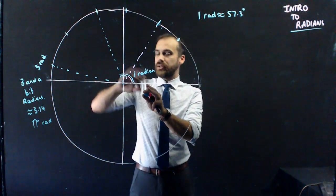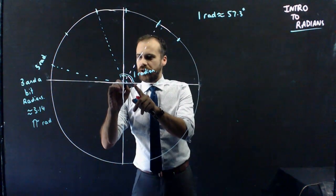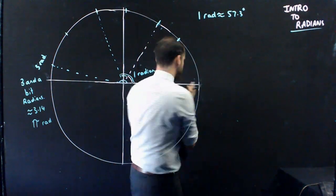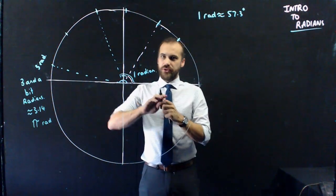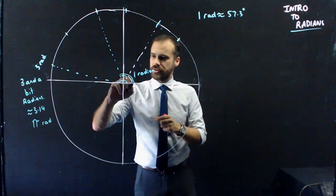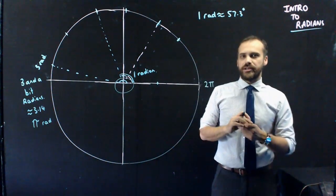We can now talk about angles in terms of pi. So, if you turn 180 degrees, if you turn around like that, then you've turned pi radians. If you turn a full 360 degrees, you've turned 2 pi radians.